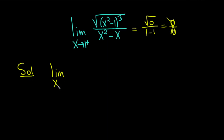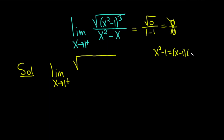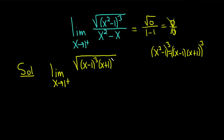This is the limit as x approaches 1 from the right of the square root of — we know x squared minus 1 can be written as x minus 1 times x plus 1. So if we're cubing this, we're basically cubing this product. When you do that, you can cube each factor, so this becomes x minus 1 cubed times x plus 1 cubed. And in the denominator, pulling out the x, we have x times x minus 1.